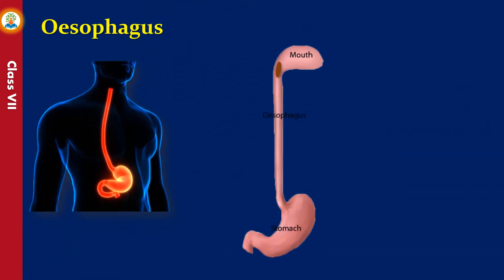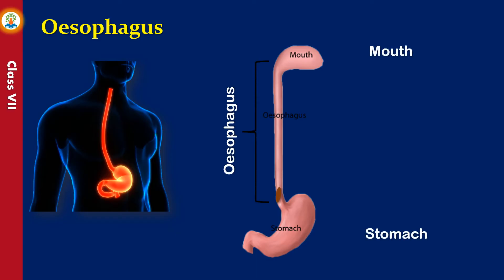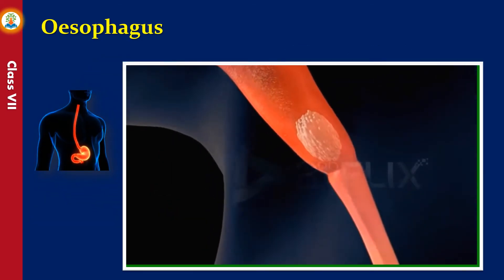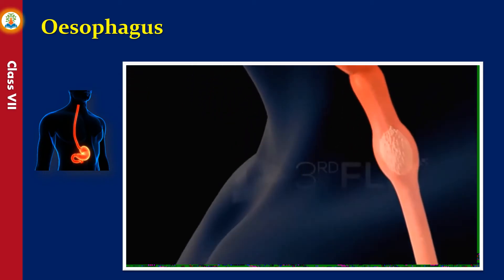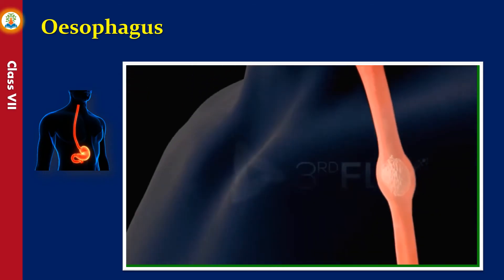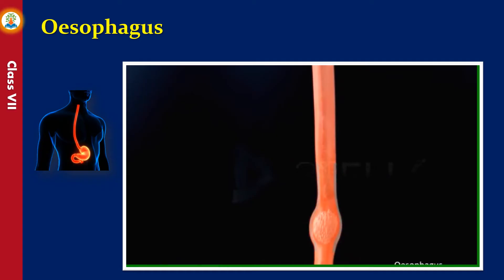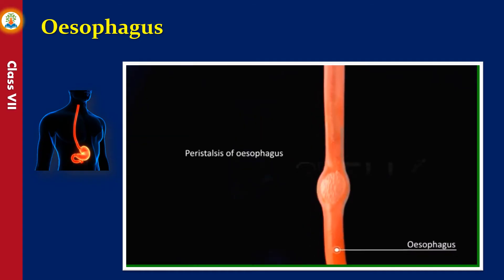From the mouth, food is pushed down into the next organ called the food pipe or esophagus. It acts as a passage to carry food from the mouth to the stomach; no digestion takes place in the esophagus. The food is pushed down in a wave-like motion caused by the contraction and relaxation of the esophageal muscles. This wavy movement is called peristalsis, which is observed throughout the alimentary canal.